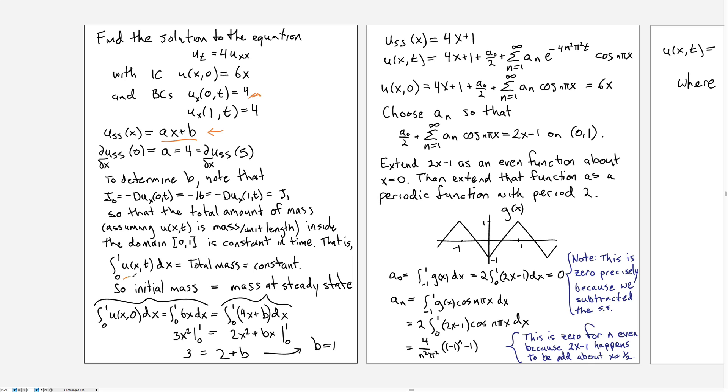So if we calculate the integral at any moment in time, it should be a constant. The initial mass is given by the integral of the initial condition, which in this case was 6x. So we integrate 6x down here. And there we get 3x² evaluated from 0 to 1, and that gives us 3.